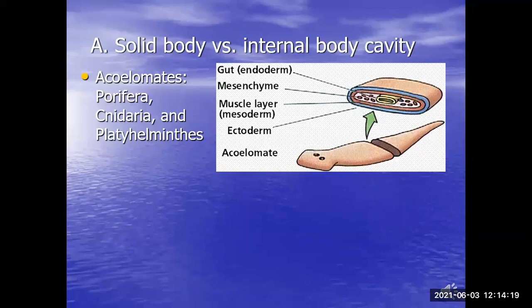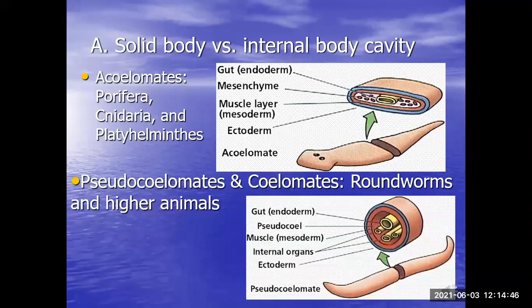The pseudocoelomates are the roundworms, seen at the end of the last talk. It's a pseudocoelom because it's a fake coelom — not a true coelom. The fluid-filled cavity is there, and the organs sit inside it, but this coelom only has mesoderm on the outside. There's no mesoderm surrounding the digestive system. That's what makes this a pseudocoelomate versus a true coelomate. Here's a better cross-sectional picture showing the distinction more clearly.